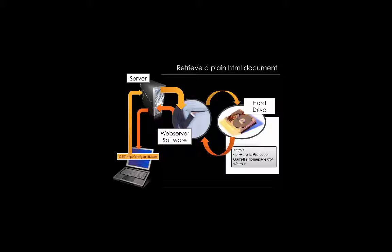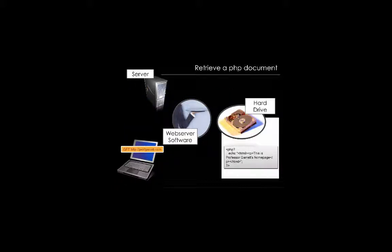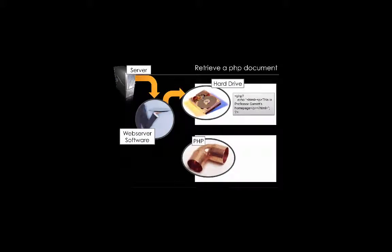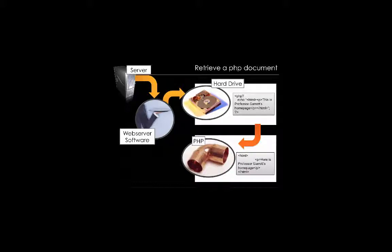For a dynamic page, it's a little bit more complicated. There's something called a programming language on the backend. It starts out the same way, but once it gets to the hard drive, the page found there is not just returned to the client — instead it's run through software. A common one you'll run into is called PHP. PHP takes the code, actually runs it, and generates the result. The first version of the file looks a little bit different than the second one, and the second one is what's being returned back to the client.